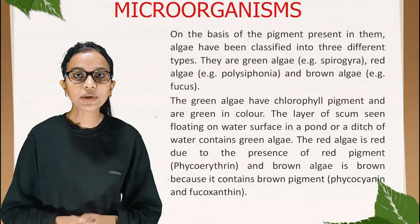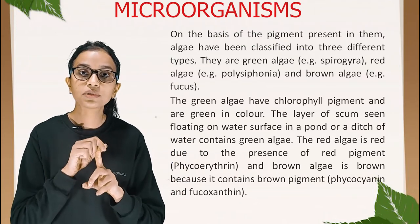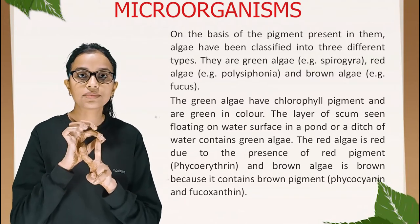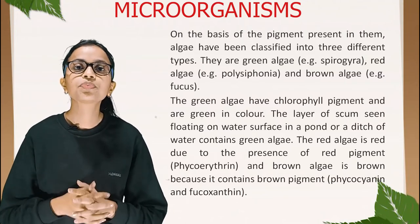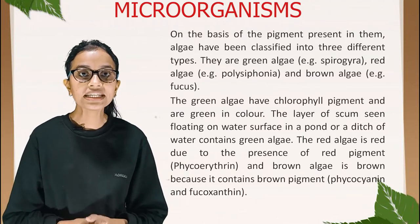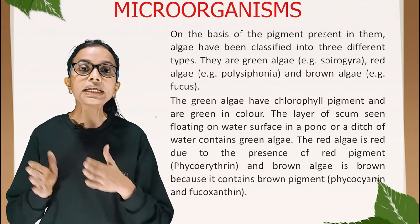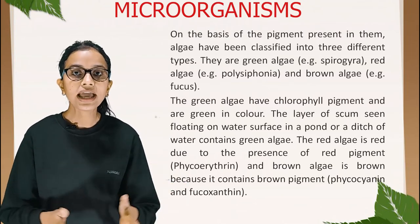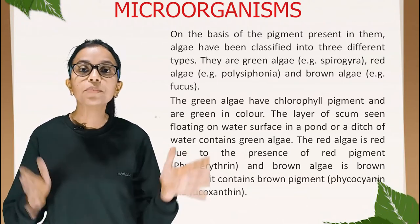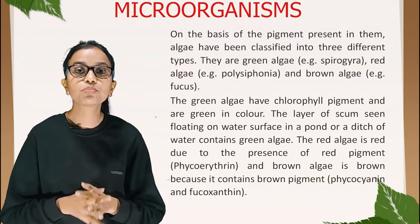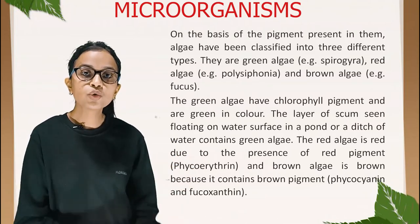On the basis of the pigment present, algae have been classified into three types: green algae (example: Spirogyra), red algae (example: Polysiphonia), and brown algae. Green algae contain chlorophyll and are green in color — the layer of scum floating on pond or ditch water contains green algae. Red algae are red due to the pigment phycoerythrin, and brown algae are brown because they contain phycocyanin and fucoxanthin.